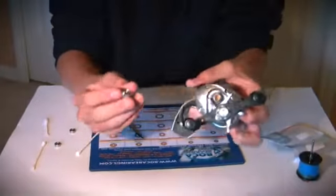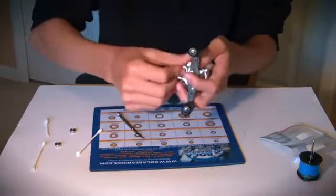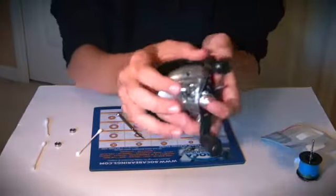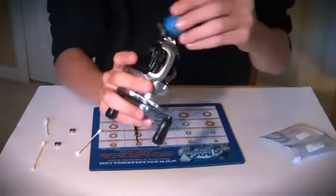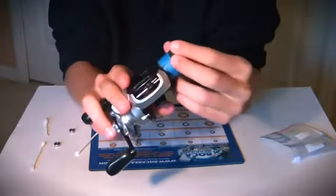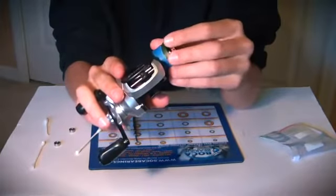We just need to put the line tension knob back on. So just screw your line tension knob back in, put the spool back in, and we'll see how these bearings run.